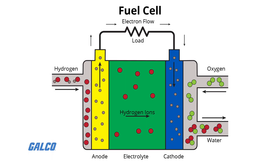If alternating current is needed, the DC output of the fuel cell can be routed through a conversion device, such as an inverter. Oxygen enters the fuel cell at the cathode, and in some cell types, it combines with electrons returning from the electrical circuit and hydrogen ions that have traveled through the electrolyte from the anode.